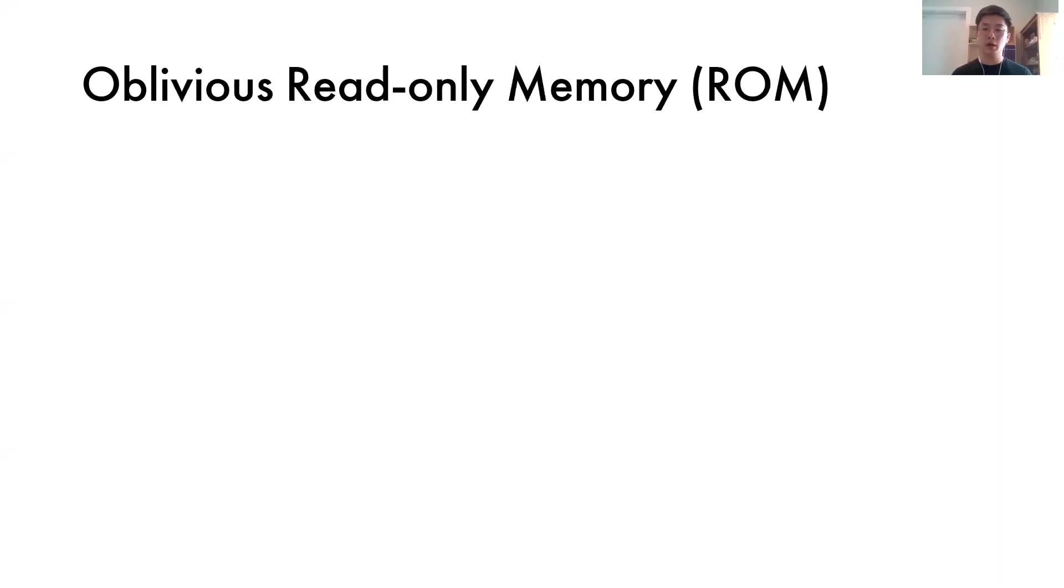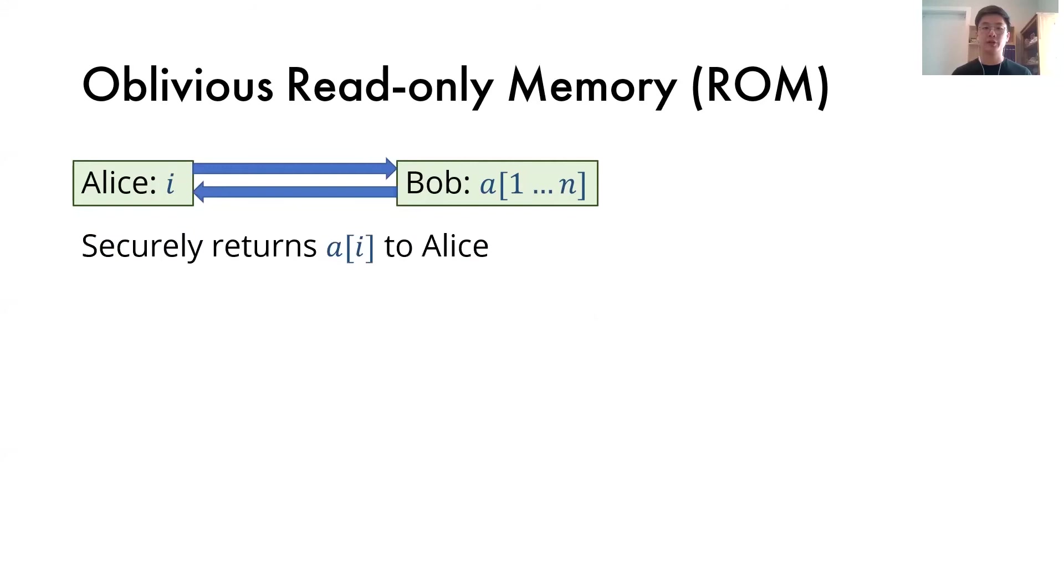Crucial to this previous slide will be the oblivious read-only memory, which allows us to do a sublinear algorithm securely. The setup of the functionality will be one party holds an index, and the other party holds an array. The goal of the protocol is for the first party to securely learn the corresponding array entry without revealing this index to the other party, and without the other party learning the index without the first party learning anything about the other entries.